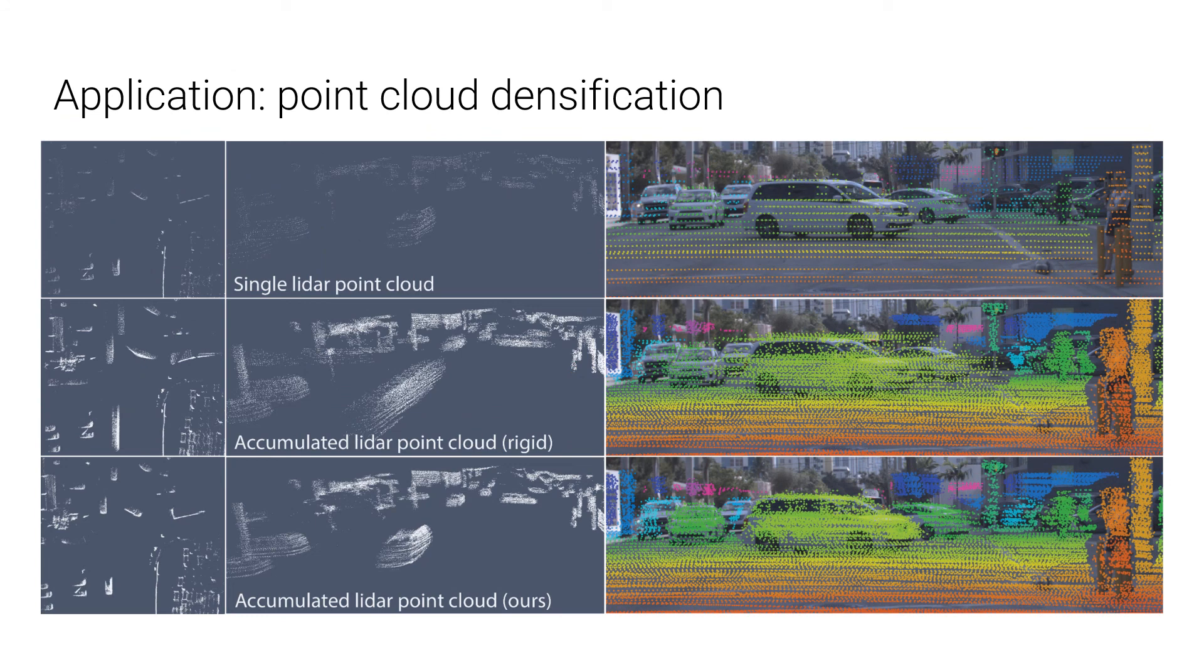An example of the application is point cloud densification. The left and middle columns show a top and front view of the densified point cloud, and the right column is the accumulated point cloud projected onto the image. Note here the smearing effect on the dynamic cars when we use ICP to rigidly accumulate the point cloud.